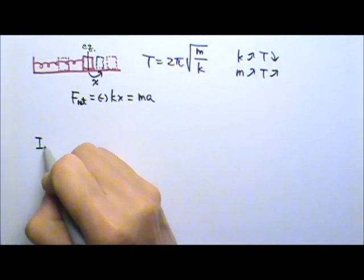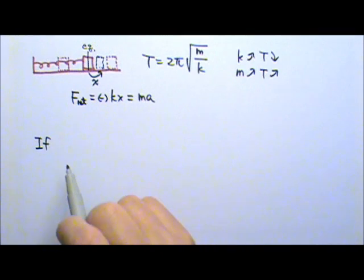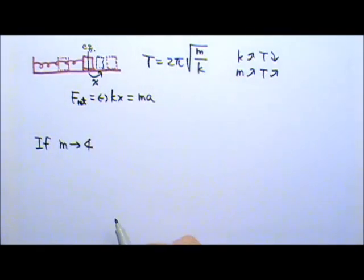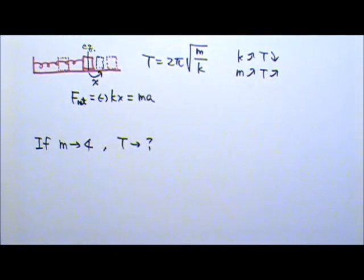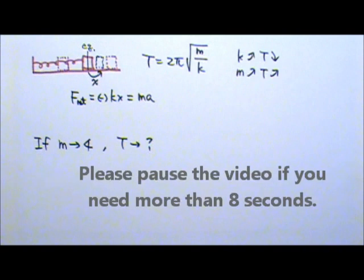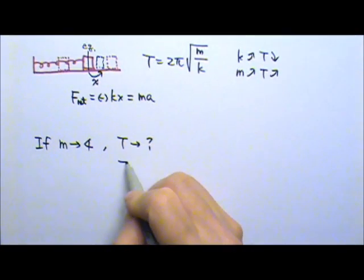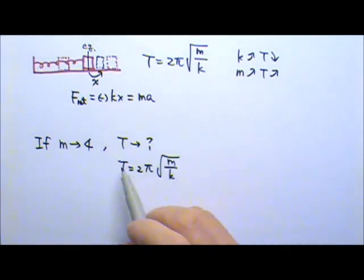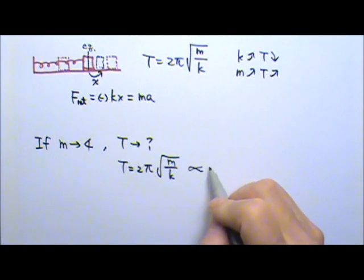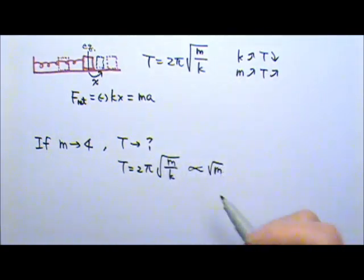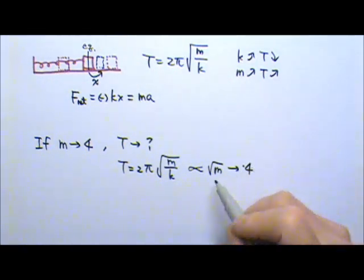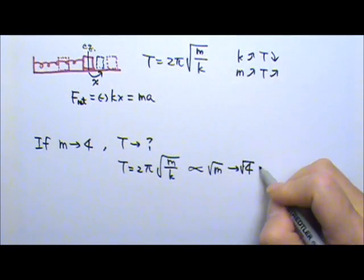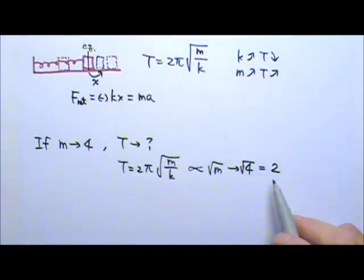Let's say we're changing the mass of an oscillator to 4 times the original value. By what factor would the period change? According to the equation, period is 2π times the square root of m over k. We're only changing the mass, so this is proportional to the square root of mass — k and 2π all stay the same. The mass changes by a factor of 4, and inside the square root that gives us 2, which means the period should double.